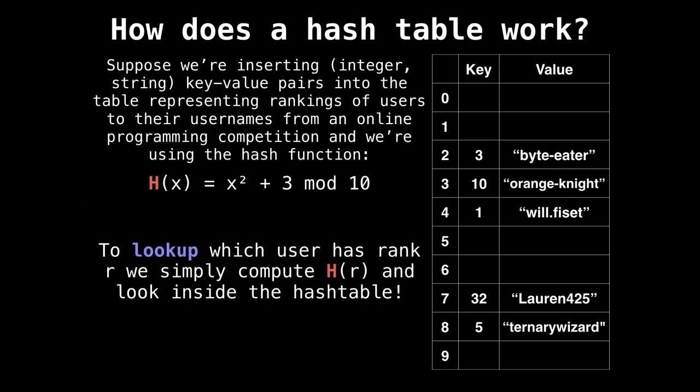Now, in the event that we want to do a lookup for a user that has a rank r, all we need to do is compute the hash value for r, and then look inside the hash table to see where this user is. So say I want to find the user with rank 10, and then I hash 10, figure out its index is three, and then I get the value, which is the orange knight has rank 10. Great.